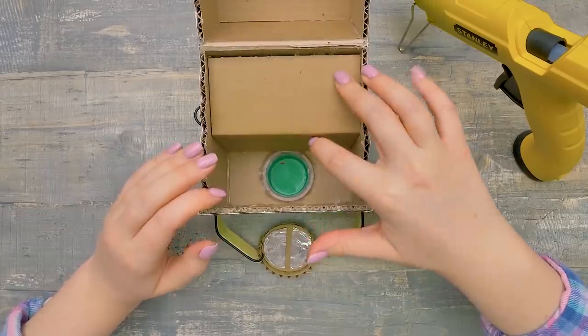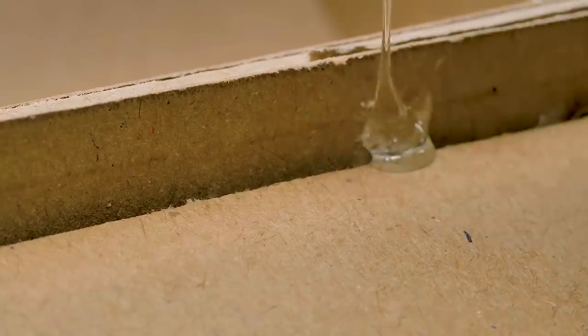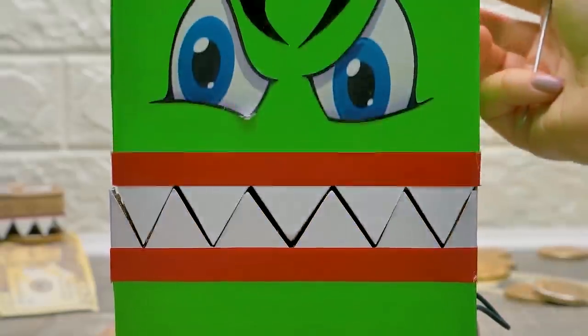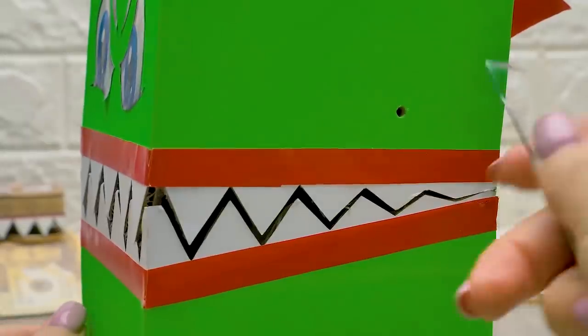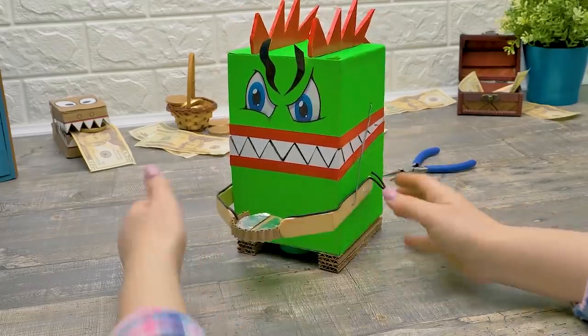And I also connected all the wires inside the box. Now I only need to cover all the insides with cardboard. We have to make sure the coins don't fall inside. Some glue should help secure it. But not too much. Perfect! And I need to attach the arms to the wires. On both sides. Done!